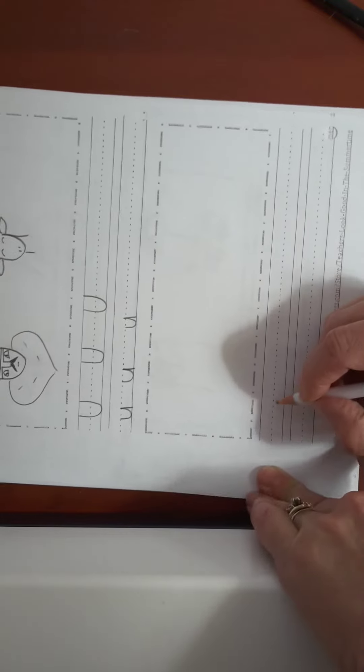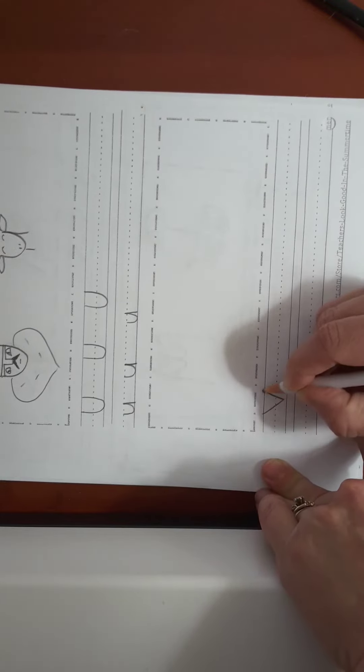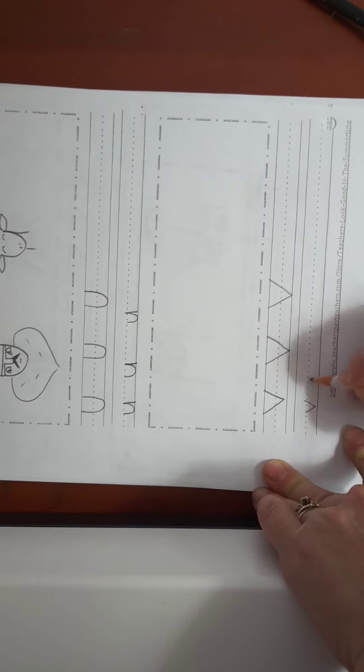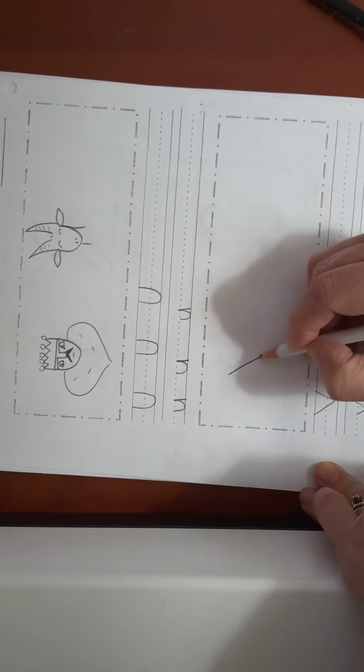Capital V touches the top line, touches the bottom line, makes a point. Lowercase v, same shape, just smaller. All right, capital V.